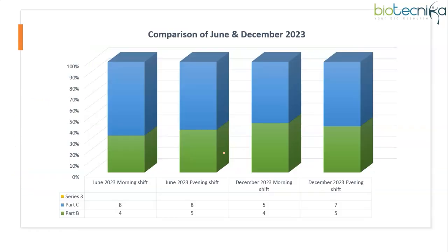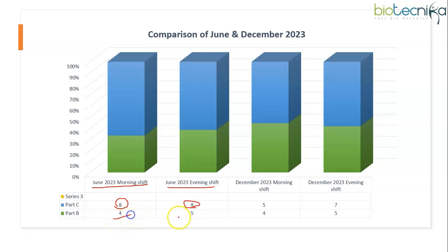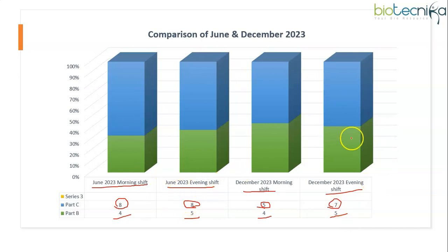Let's have a look at the comparison of June and December 2023 — the number of questions that came from Unit 6. In the June Morning Shift and June Evening Shift, Part C questions were 8 in both shifts, and Part B was 4 and 5 respectively. In December, morning shift had 5 Part C and 4 Part B, and evening shift had 7 Part C and 5 Part B. So looking at this, I can say that a minimum of 10 questions and a maximum of 12 to 14 questions you can expect from Unit 6 in every CSIR Net exam.